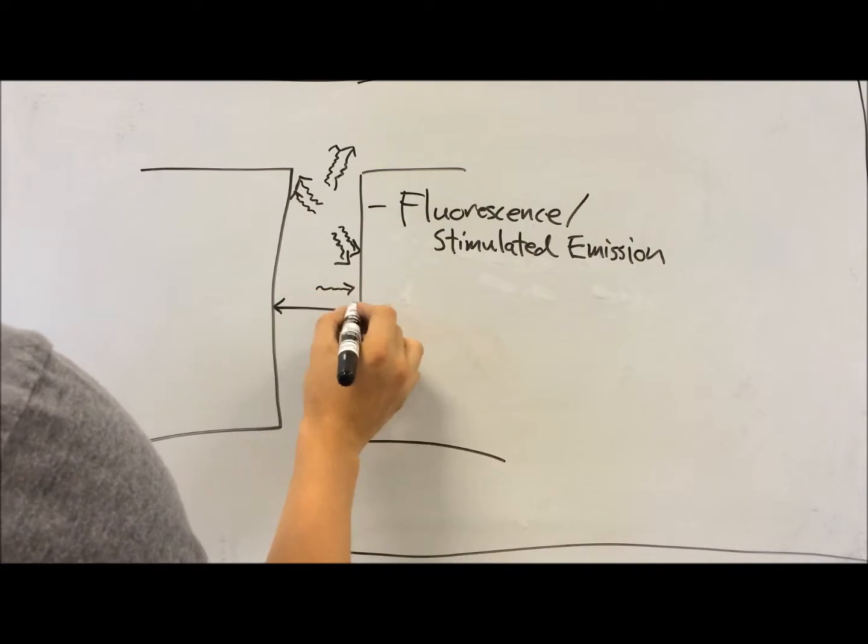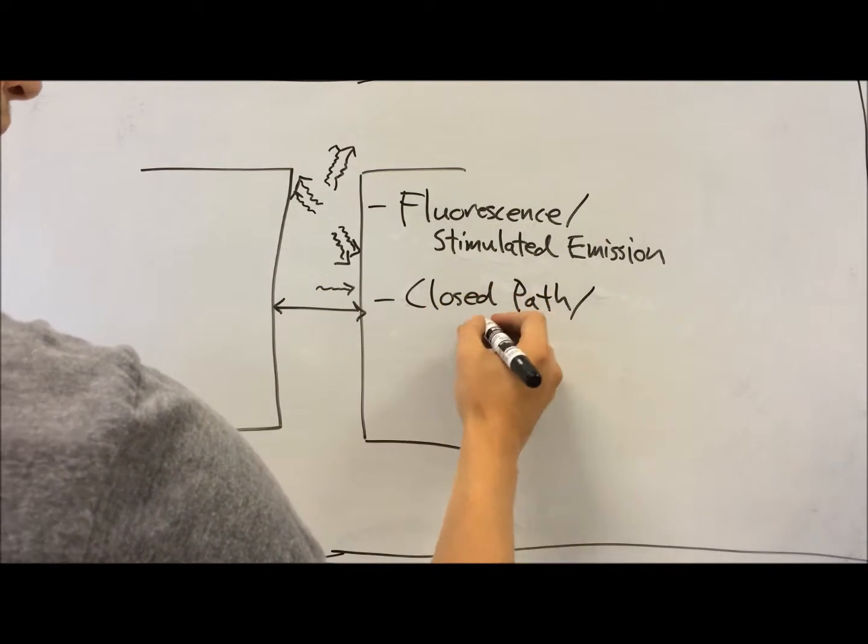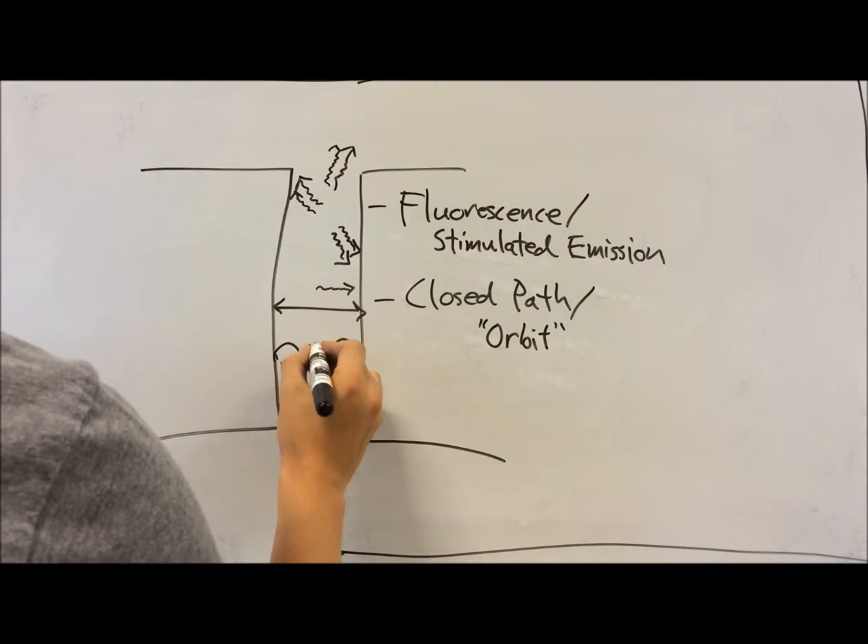These initial photons travel in all directions, but in some directions, the traveling light forms a closed path, sometimes called an orbit, and experiences further amplification.